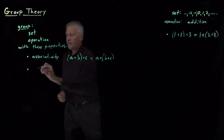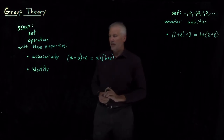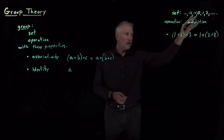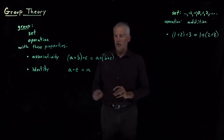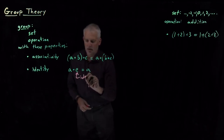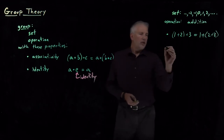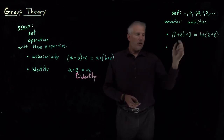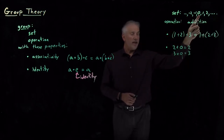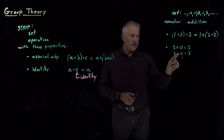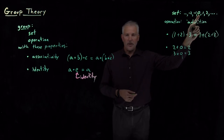The second property that a group needs to have is there must be an identity element in the set. The identity is a particular element of the set that, no matter what element you combine with it, you get back the same element you started with. For addition, the identity element is 0: if I take 2 plus 0, I get back 2; if I take 3 plus 0, I get back 3. A key point about the identity is there's only allowed to be one identity element.